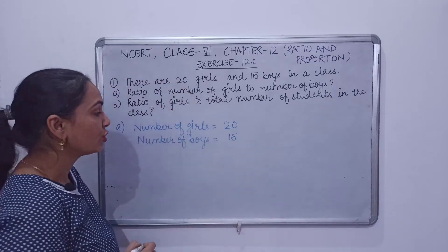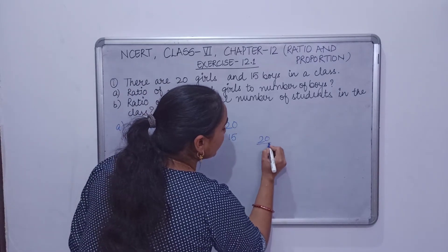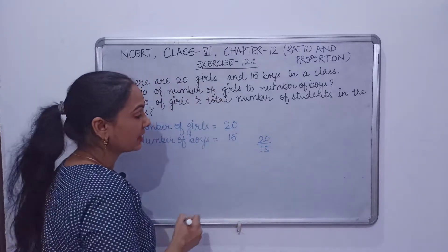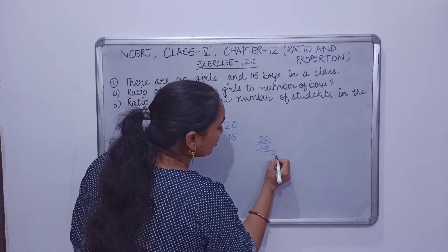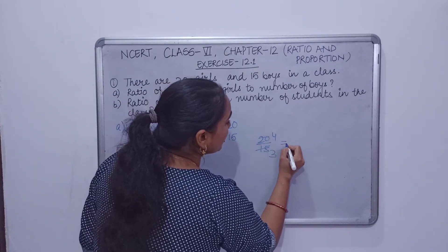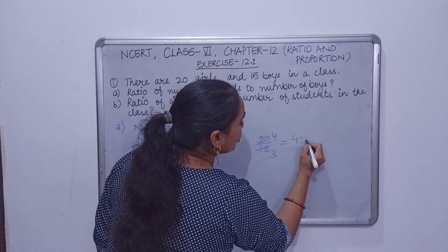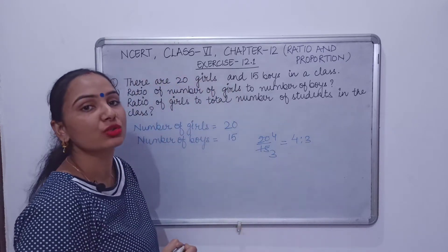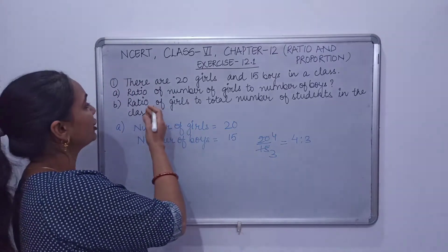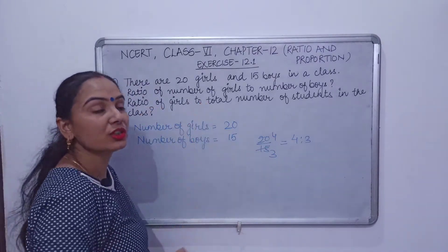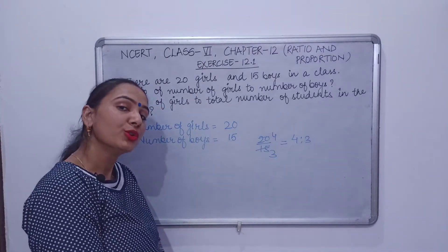So ratio will be 20 by 15. That is 5 threes of 15, 5 fours of 20, means 4 ratio 3, or 4 is to 3 is the ratio of number of girls to the number of boys.